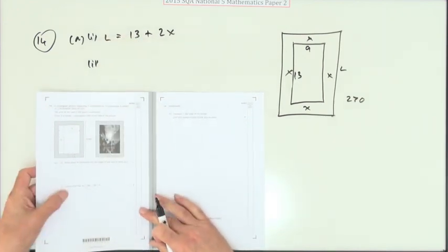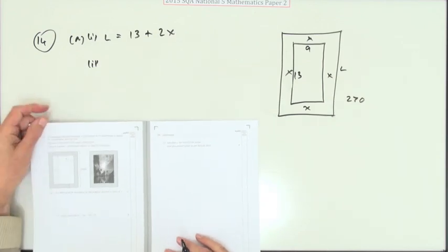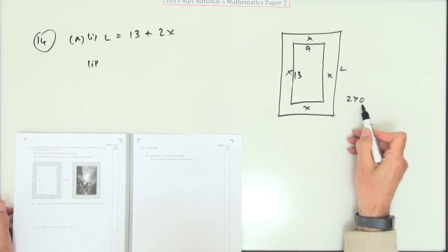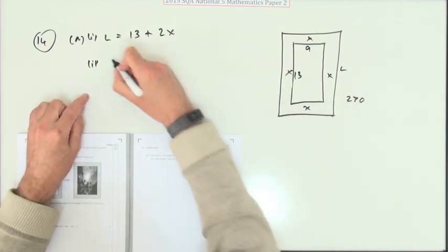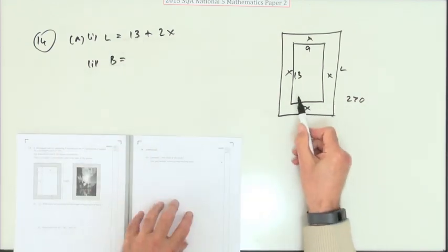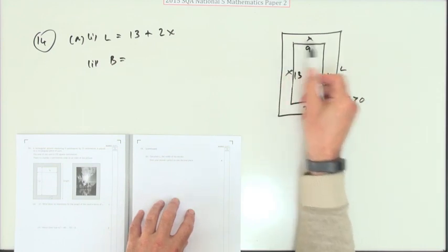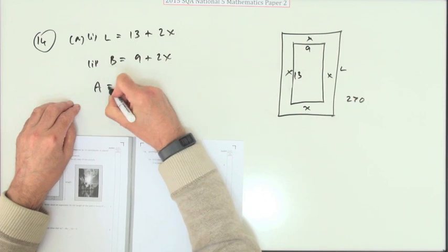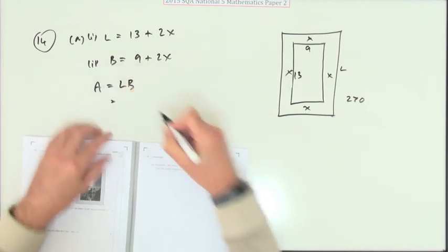Two. Hence show that you end up with this quadratic equation. Well, that must be something to do with this 270 for the area. So to work out the area, I would need the breadth as well. Well, the breadth will be 9 plus an X plus an X. So that's 9 plus 2X. So now I can work out the area because that's length times breadth.